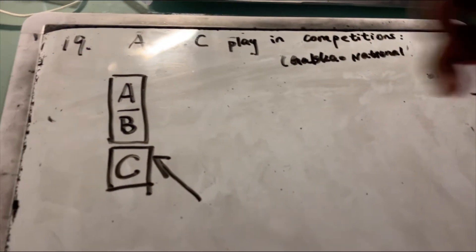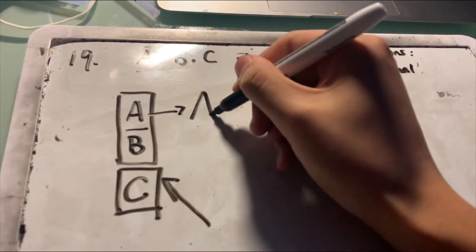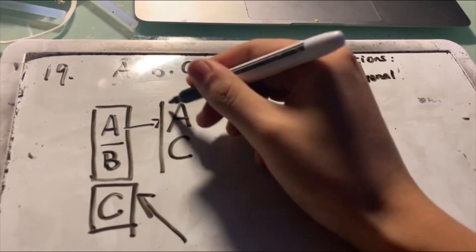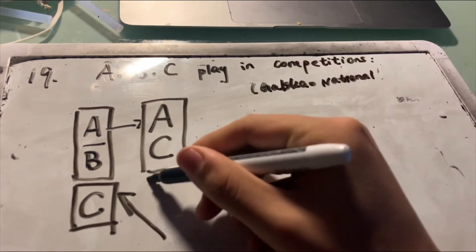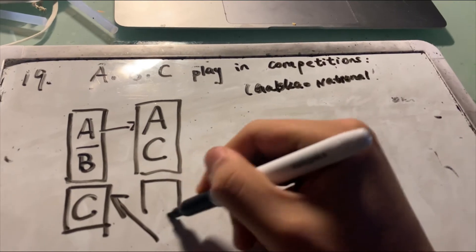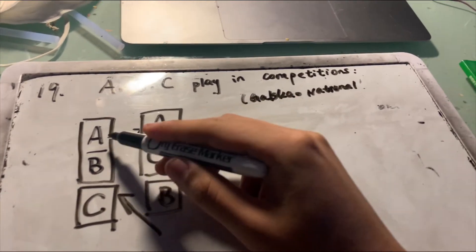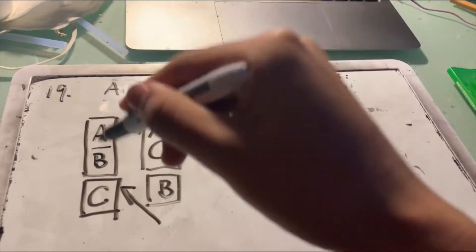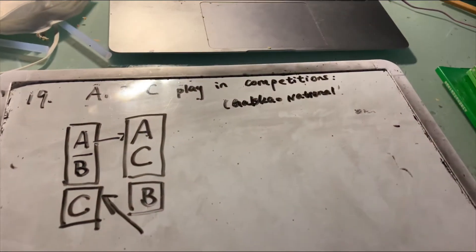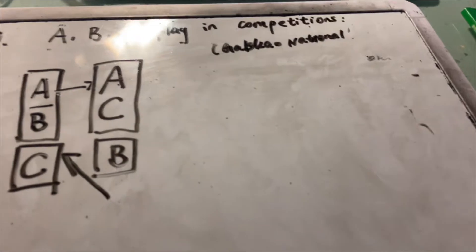So this means that if A wins, he's going to compete with C, and B is going to draw a bye. The person who wins advances to the next round, and the person who loses will become the bye in the next round.